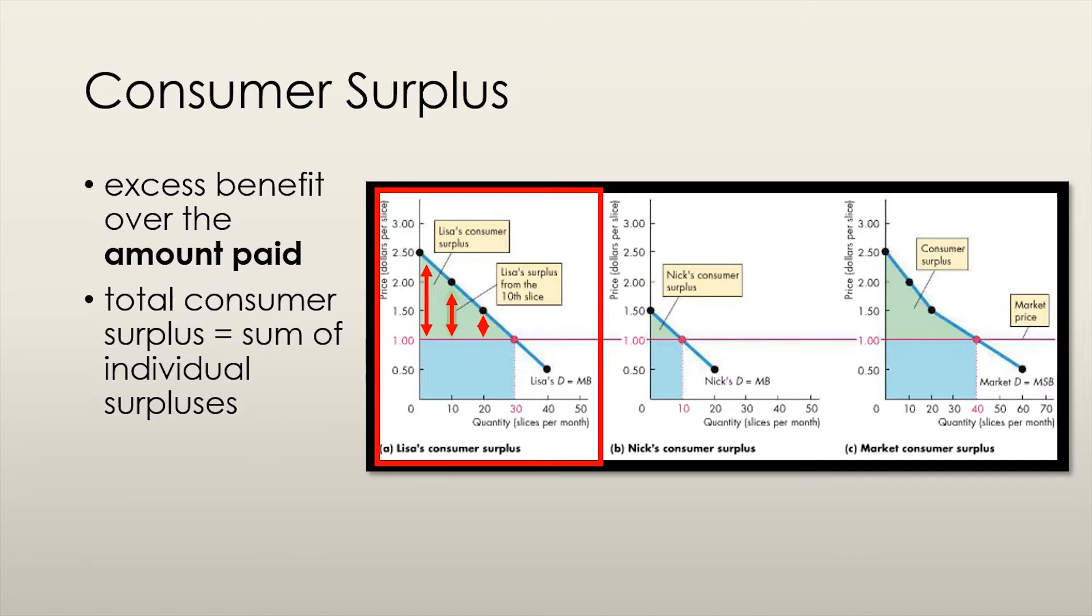Lisa would buy 30 slices in this scenario. If we consider the demand curve to be a marginal benefit curve, we'll notice that the first 29 slices are valued at more than a dollar by Lisa. For example, the 10th slice seems to be valued at around $2. So, for the 10th slice, Lisa has a surplus of $1 because she values it to be $2 but only pays $1. It's only for the 30th slice that Lisa values it to be the same as the amount that she pays for it.